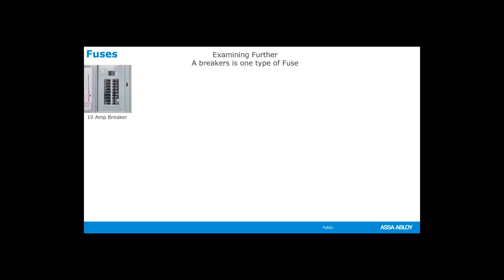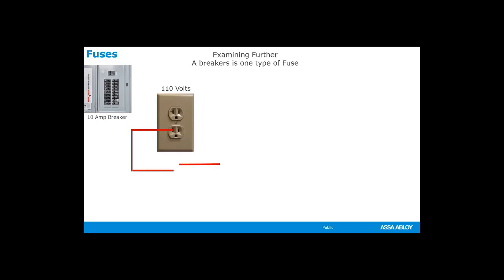A breaker box or a fuse box contains circuit breakers. The circuit breakers are rated for a certain number of amps at 110 volts — this would be like a circuit breaker you have in your house, and each circuit breaker has a certain amp rating at 110 volts. Within the circuit, if the amperage exceeds the rated amperage value of the circuit breaker, the circuit will pop, causing the current to be cut to the load. A circuit breaker is just one type of fuse. So here we have a household wall outlet, capable of supplying 110 volts. The breaker box in the basement has a 10-amp breaker on this wall switch.